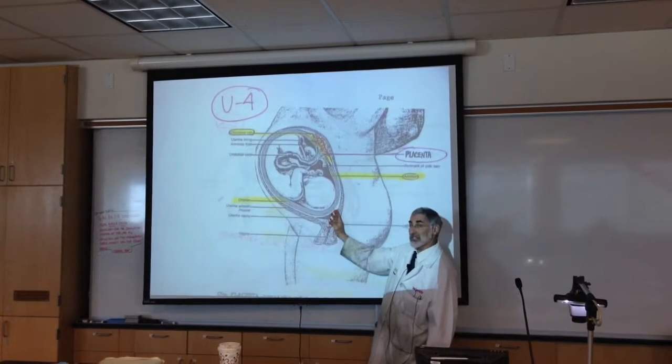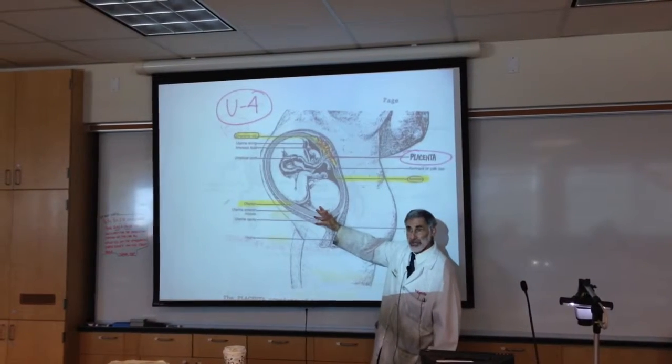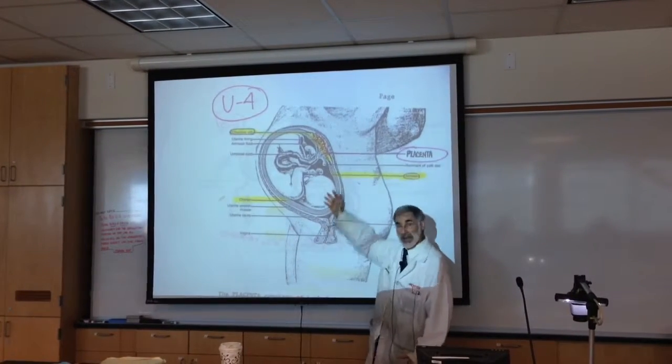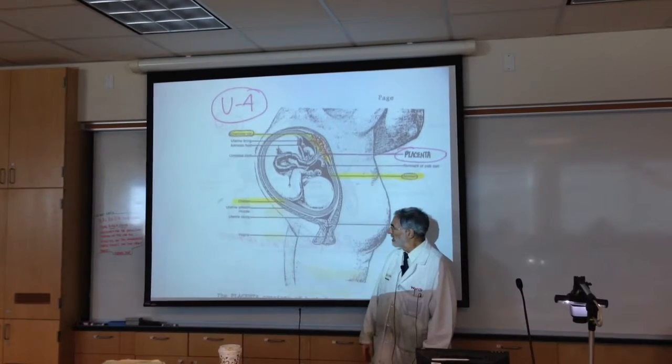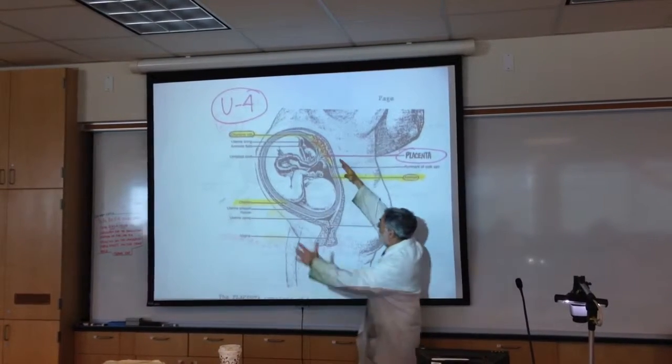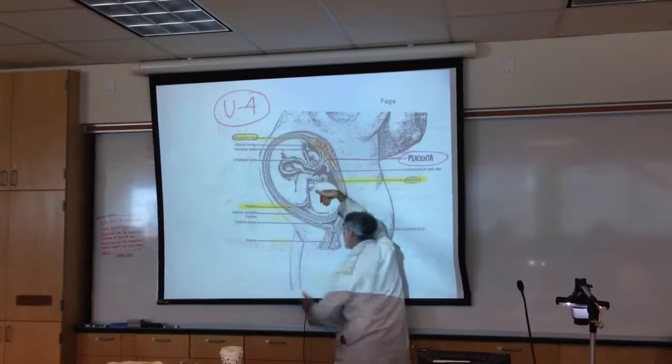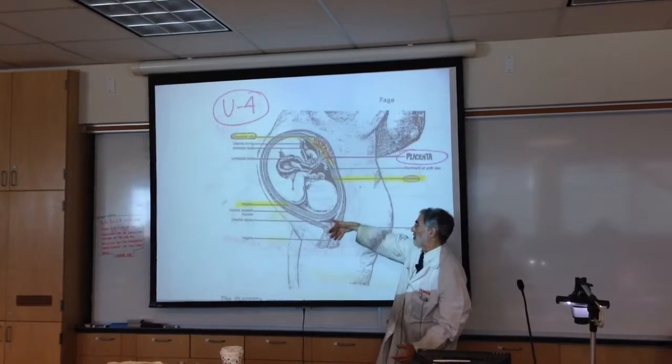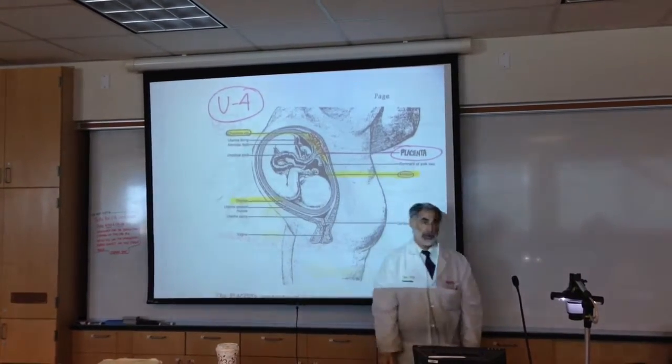So, these sacs, at the time of birth, rupture. And there's fluid that comes out, amniotic fluid. And then this baby is going to, the uterus is going to contract to push this baby out of the uterus and out the vaginal canal, the birth canal.